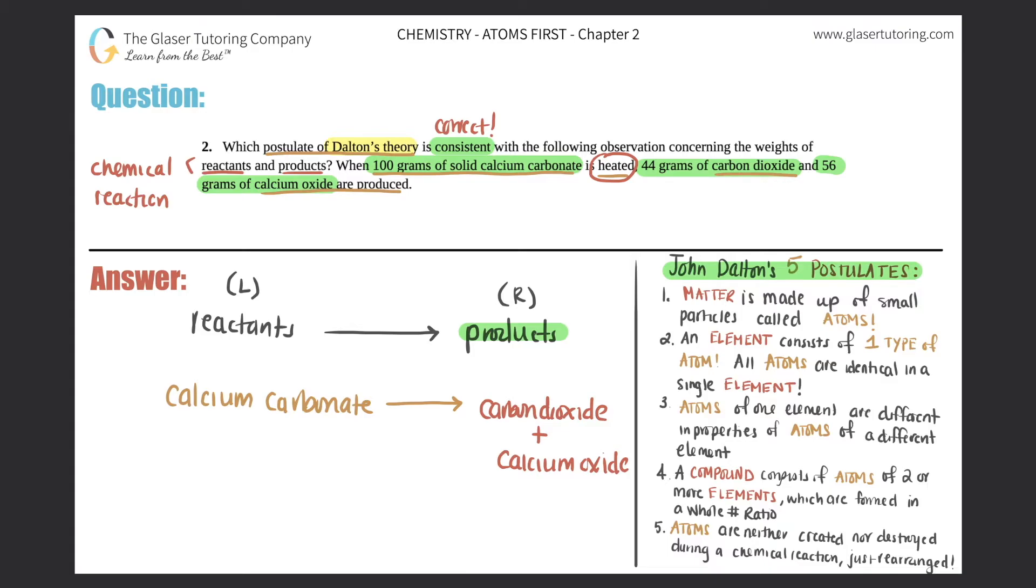Now let's put the masses here. They said that there was 100 grams of calcium carbonate, and they said that there was 44 grams of carbon dioxide and 56 grams of calcium oxide. Which postulate is consistent with the following?